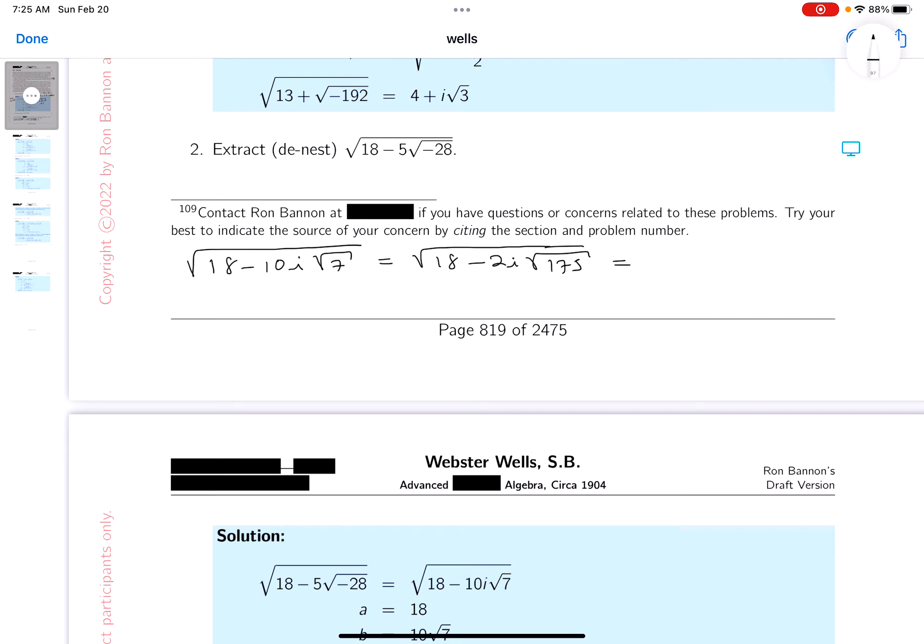So I'm gonna write down what I believe it could be written as: root a minus root b, I just don't know what they are. What I could do is square both sides. I get 18 minus 2i root 175 equals, let's be careful here, it's gonna be a and then I would get minus b.